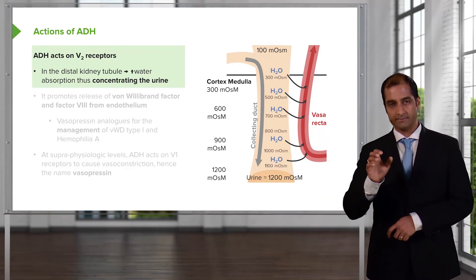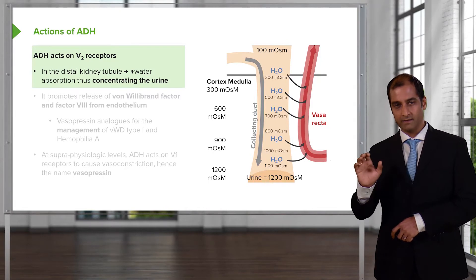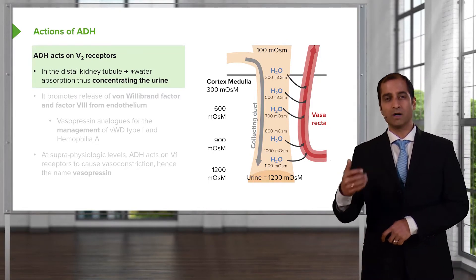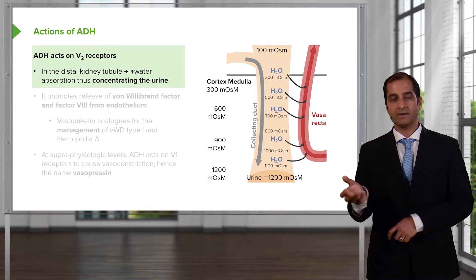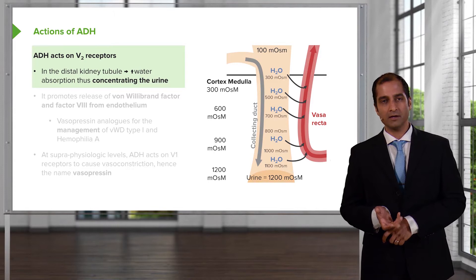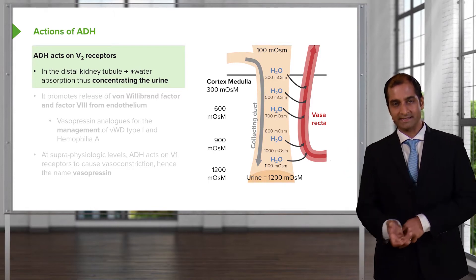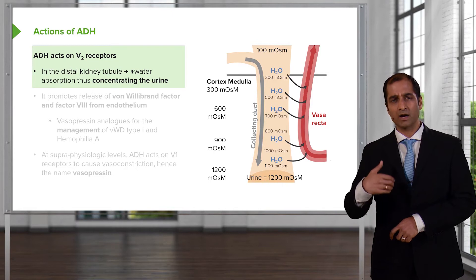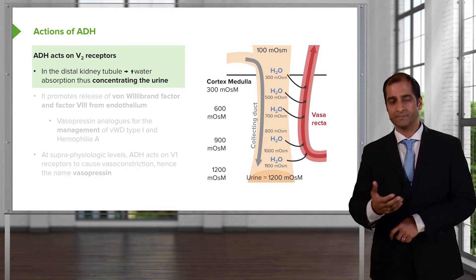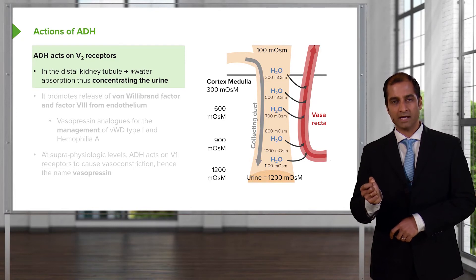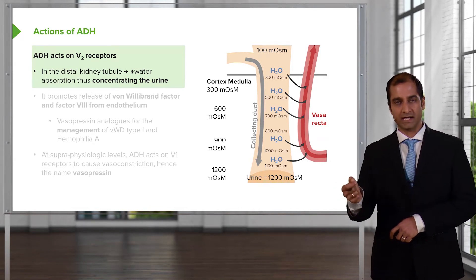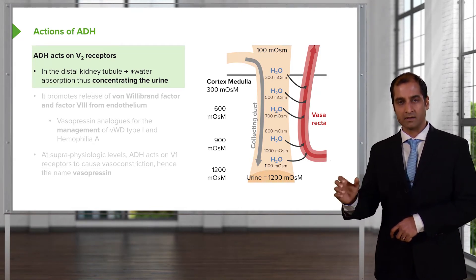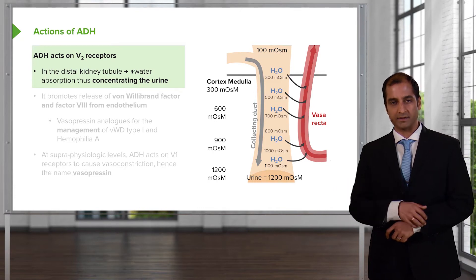They can ask a physiologic question: without the effect of ADH on the nephron, where in the nephron would urine osmolarity be the highest? It would have to be the loop — specifically the descending loop of Henle, where you're reabsorbing water, but that has nothing to do with ADH. It's only with the help of ADH and V2 receptors reabsorbing water that you form concentrated urine.